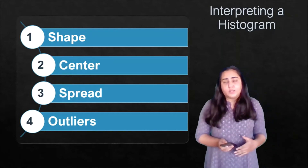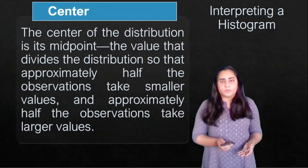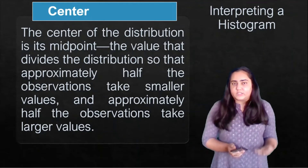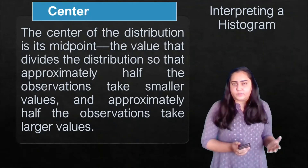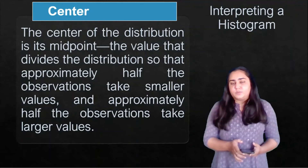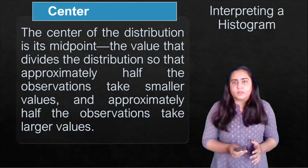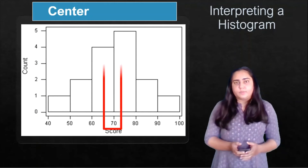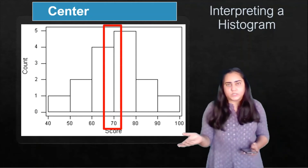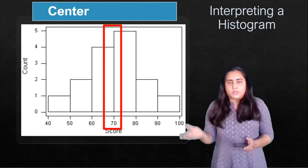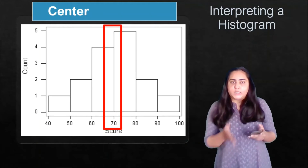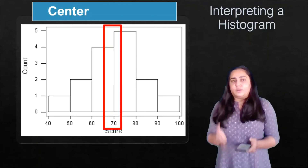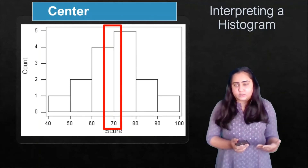Now let's look at the center of the histogram. The center of the distribution is its midpoint — the value that divides the distribution so that approximately half the observations take smaller values and approximately half take larger values. In this histogram, the midpoint is 70, because approximately half the values are smaller than 70 and approximately half are greater than 70. So this is known as the center of a histogram.